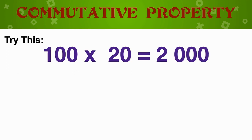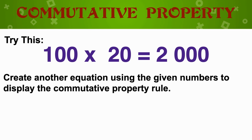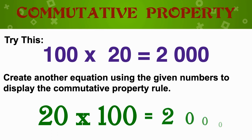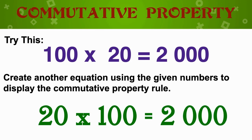Try this one: 100 times 20 is equal to 2000. Can you think of another equation using the given numbers to display the commutative or order property rule? If you said 20 times 100 is equal to 2000, then you are absolutely positively correct.